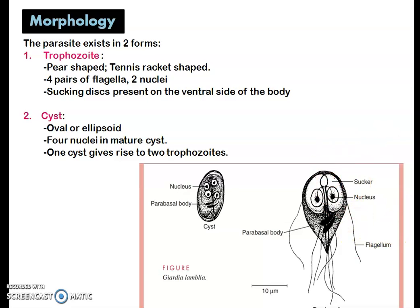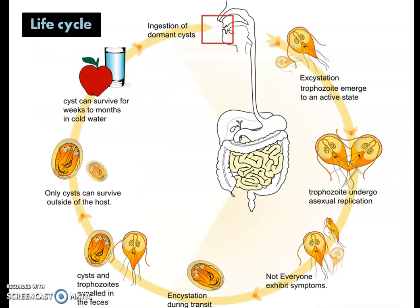All these structures together give a smiley face resemblance to the trophozoite. Coming to the cyst, the cyst is oval or ellipsoidal in shape, has four nuclei, and from one cyst, a trophozoite can arise.